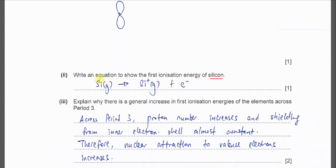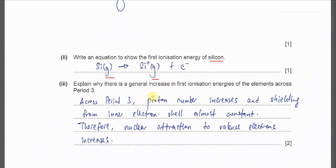Explain why there is a general increase in the first IE of the elements across period 3. When it's across period 3, we know that proton number increases. In the period 3 elements they have the same inner shell. Same number of inner shell. Inner shell will be responsible for the shielding.